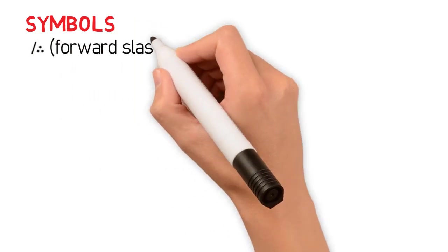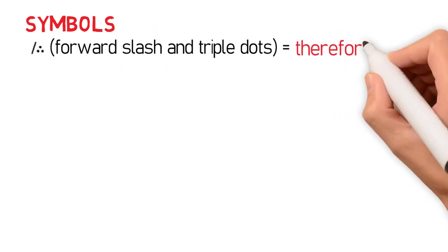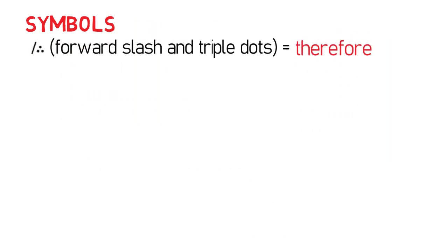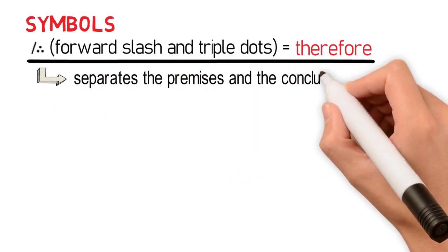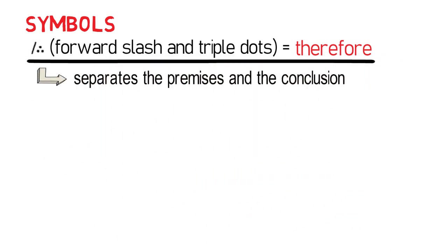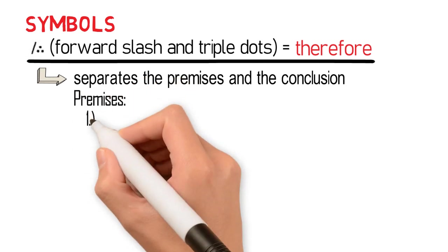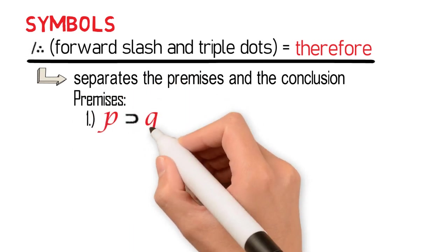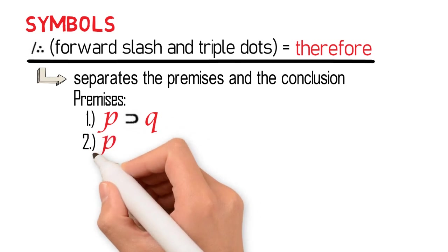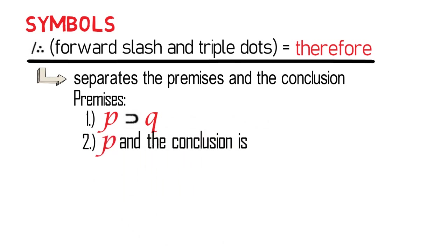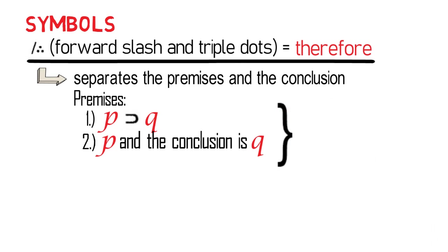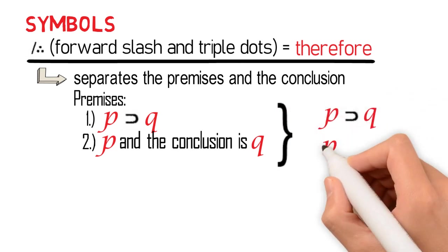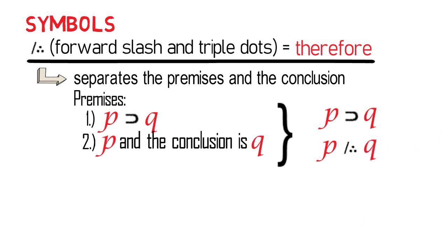The symbol forward slash and triple dots is read as 'therefore.' This symbol is used to separate the premises and the conclusion in an argument. For example, if the premises in the argument are 'P then Q' and 'P,' and the conclusion is 'Q,' then the argument is symbolized as: P ⊃ Q, P, therefore Q.